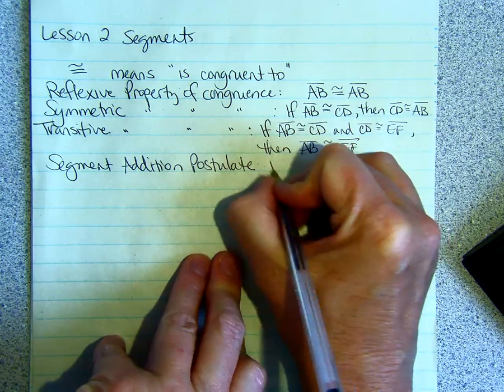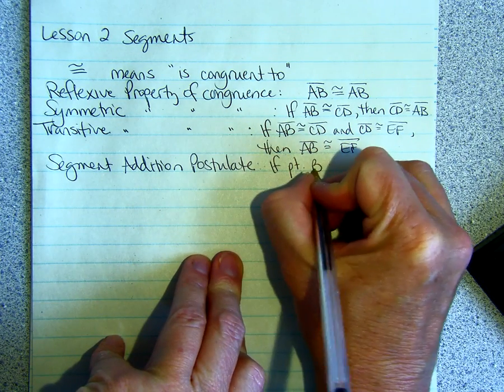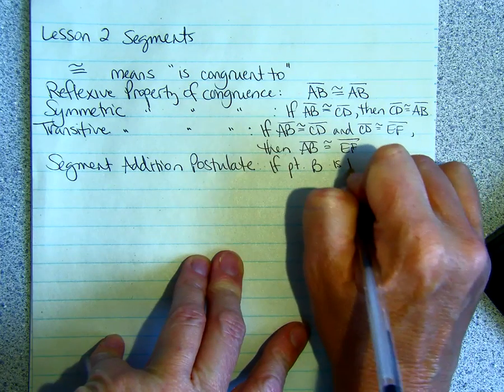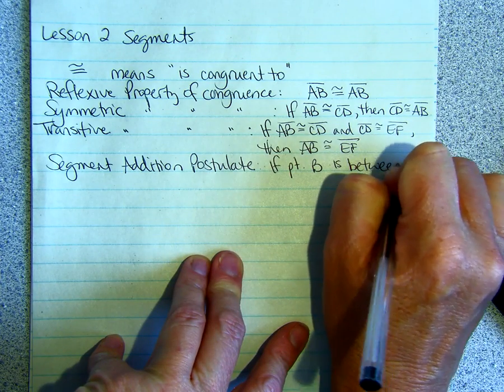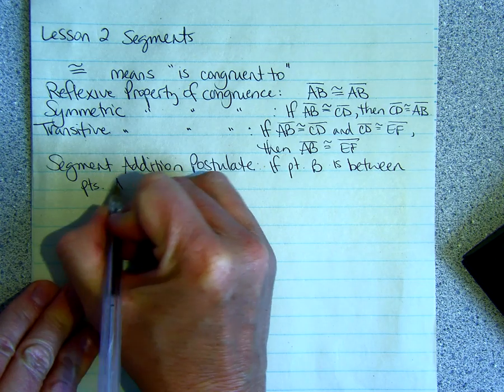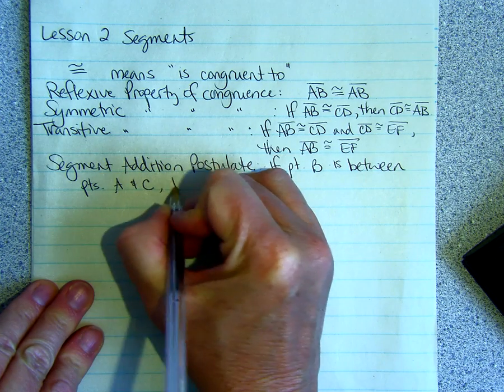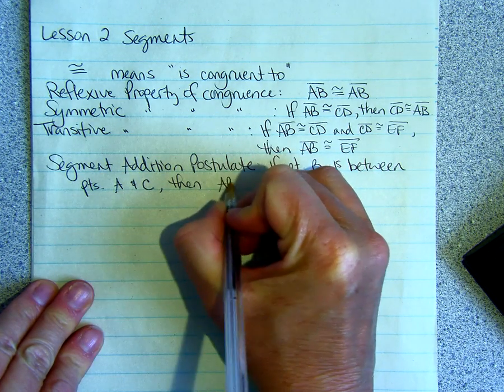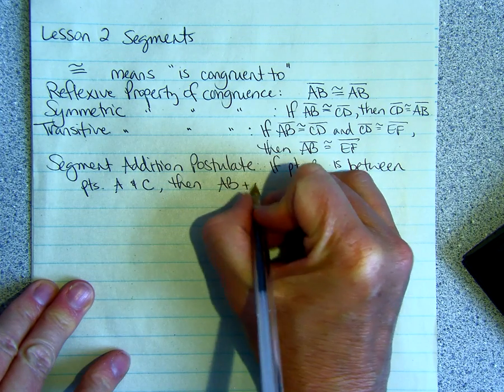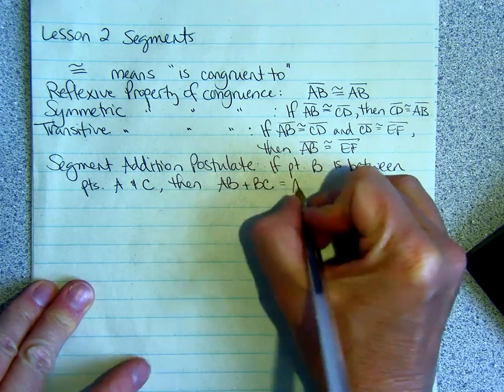The segment addition postulate just says if point B is between points A and C, then AB plus BC equals AC.